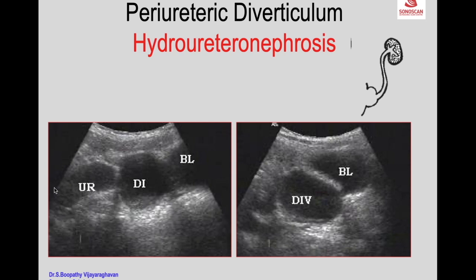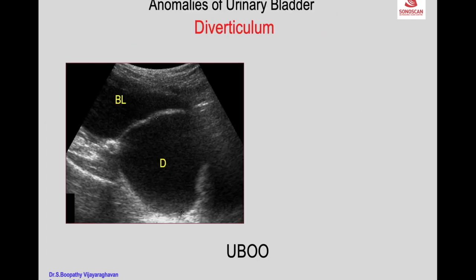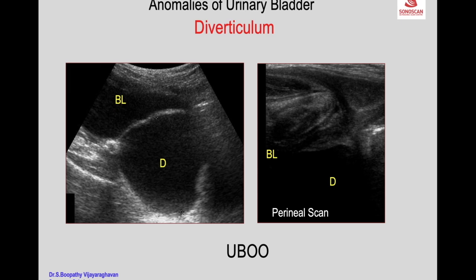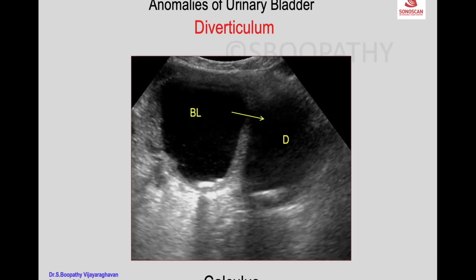In periureteric diverticulum, the ureter is dilated and the communication of the diverticulum with the bladder is visible. A vesical diverticulum very close to the bladder neck can press on the bladder neck or urethra, causing urinary retention and bladder outflow obstruction. The perineal scan shows the pubic symphysis and bladder with the diverticulum pressing on the bladder neck.